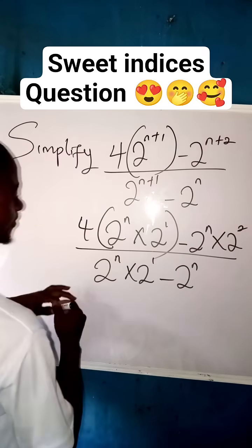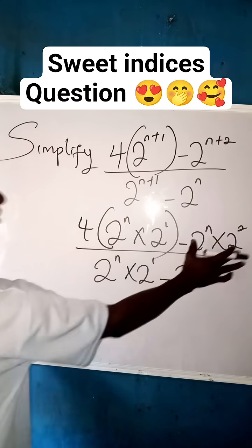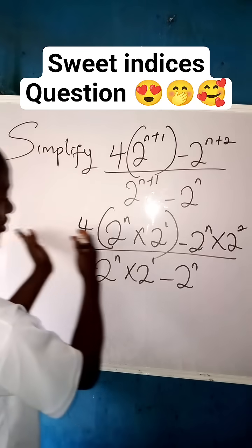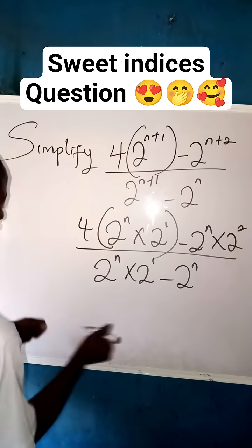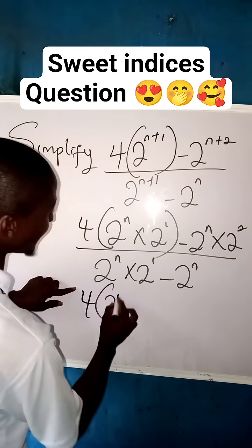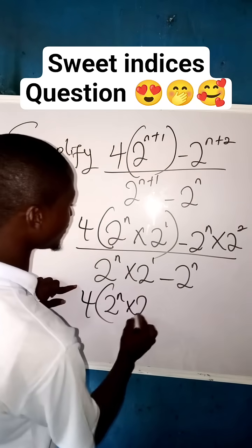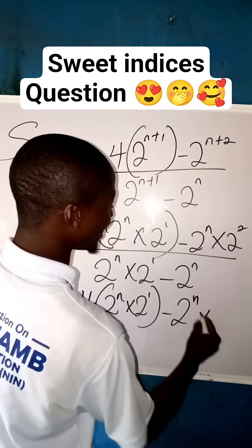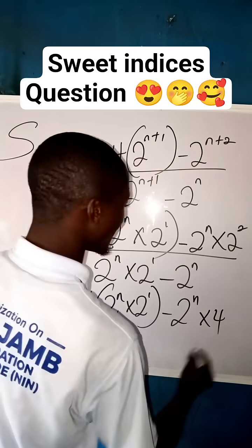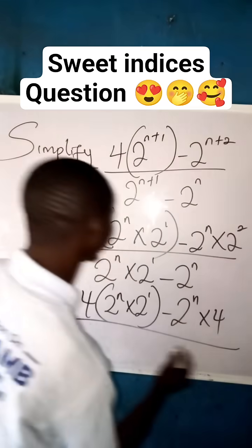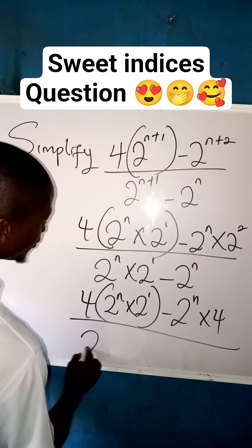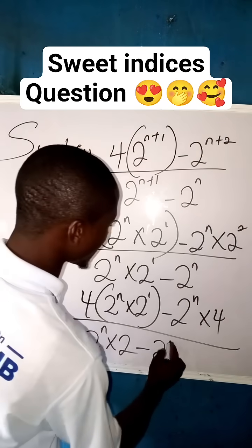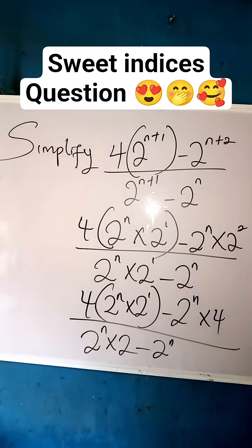Now, what you are going to do next is simplify and open here, work on this side. We are left with 4 times 2 to the power of n times 2 to the power of 1, then minus 2 to the power of n times 4, all over 2 to the power of n times 2 minus 2 to the power of n. Hope you are following.